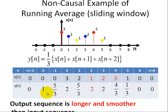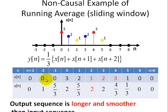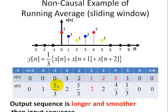Note that in the output sequence y(n), the output appears before the input — and that's what defines a non-causal filter. Here you can see the output values of 1 and 5/3 occurring before n equals 0.